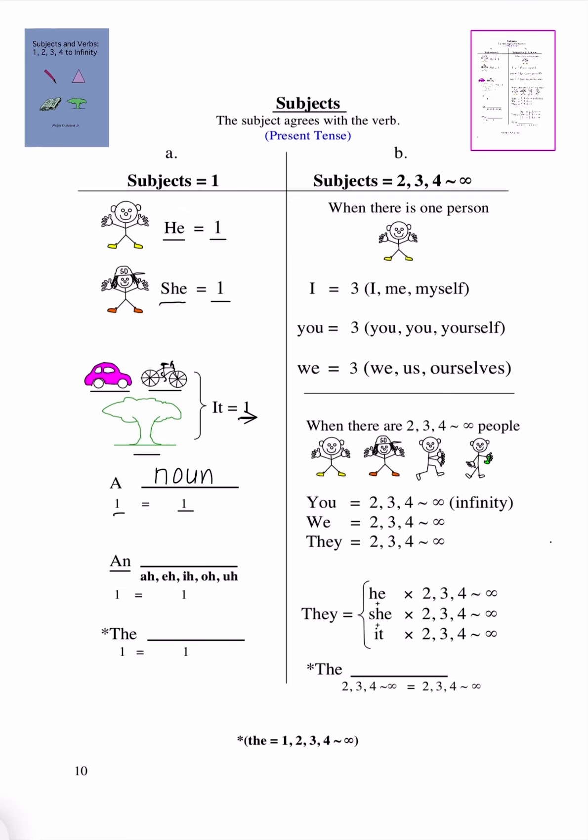An is equal to 1, and the word next to an will be equal to 1. And that word, again, will be a noun. Now, when you are using an, the word, or this noun here, this noun's first sound must be the same as this A.